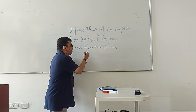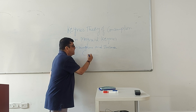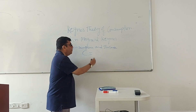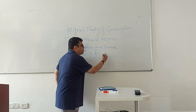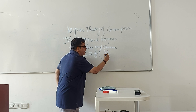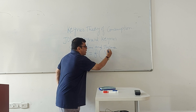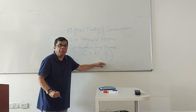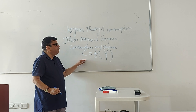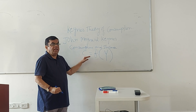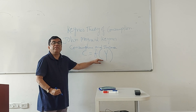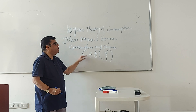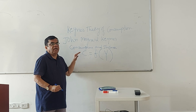That is the reason why Keynes said C, that is consumption, is a function of Y — consumption is a function of income, and income is the most important determinant of consumption.